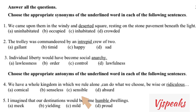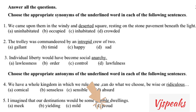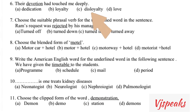Fourth question is antonym. 'We have a whole kingdom in which we rule alone, can do what we choose, be wise or ridiculous.' Ridiculous means comical, and its antonym is sensible. Next, 'I imagine that our destination would be some humble dwellings.' Humble — the opposite is proud.